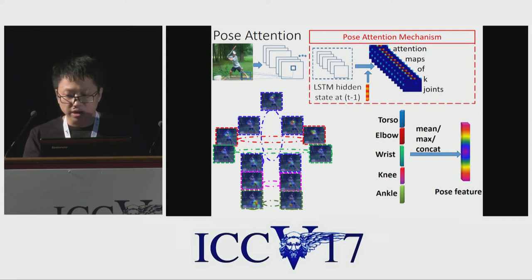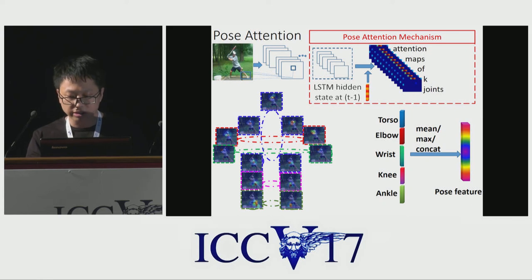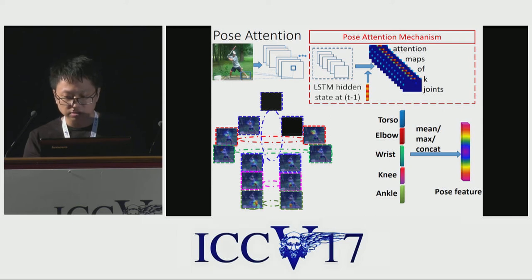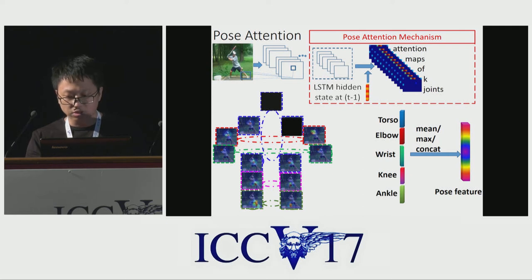The proposed human part structure design enables our network to deal with occlusion. More specifically, since the human part feature is calculated as a summarization of all related joints, when some joints are occluded, other joints in the same part may still be discriminative. Second, the pose feature is a pooling of all human part features, so when some parts are occluded, other parts may still be distinct for action recognition.